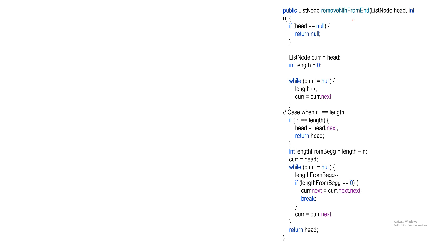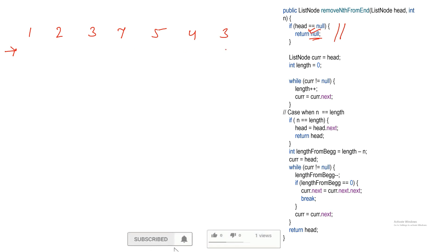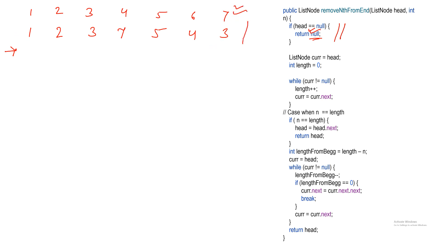To save time I have already coded this — let me dry run on the code. Suppose the linked list is 1, 2, 3, 7, 5, 4, 3. The first thing to do is find the length. If head is null, return null since there is nothing to delete. Otherwise iterate the list — in this case the length is 7.